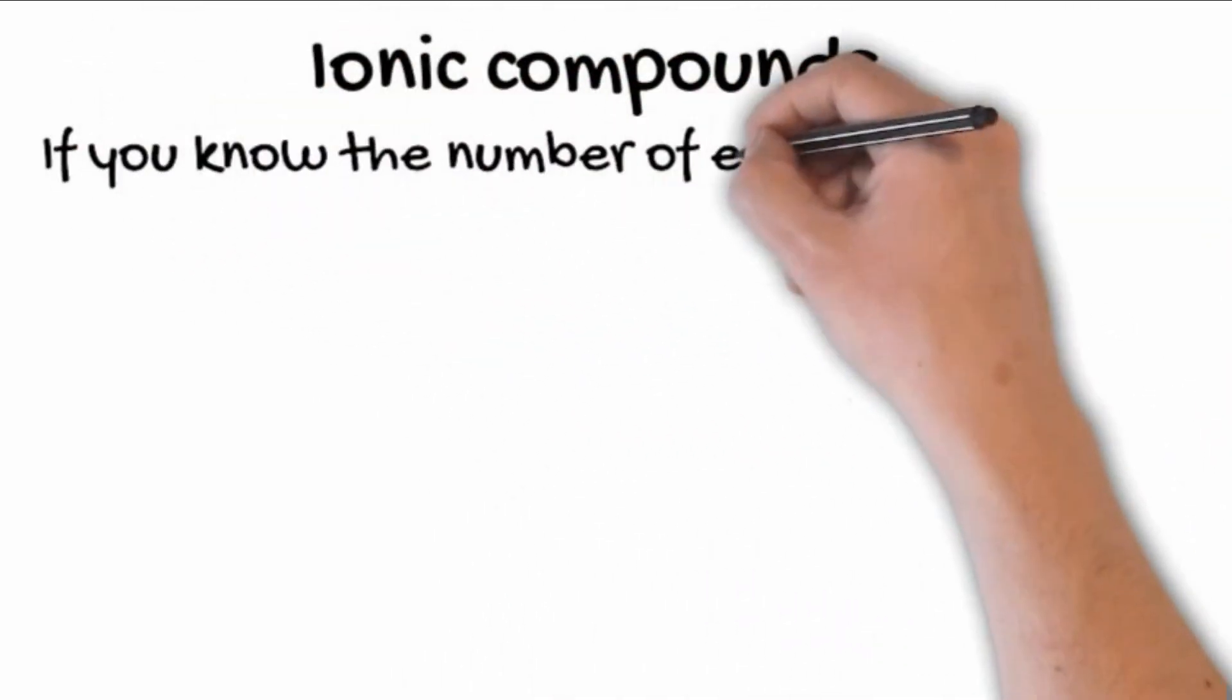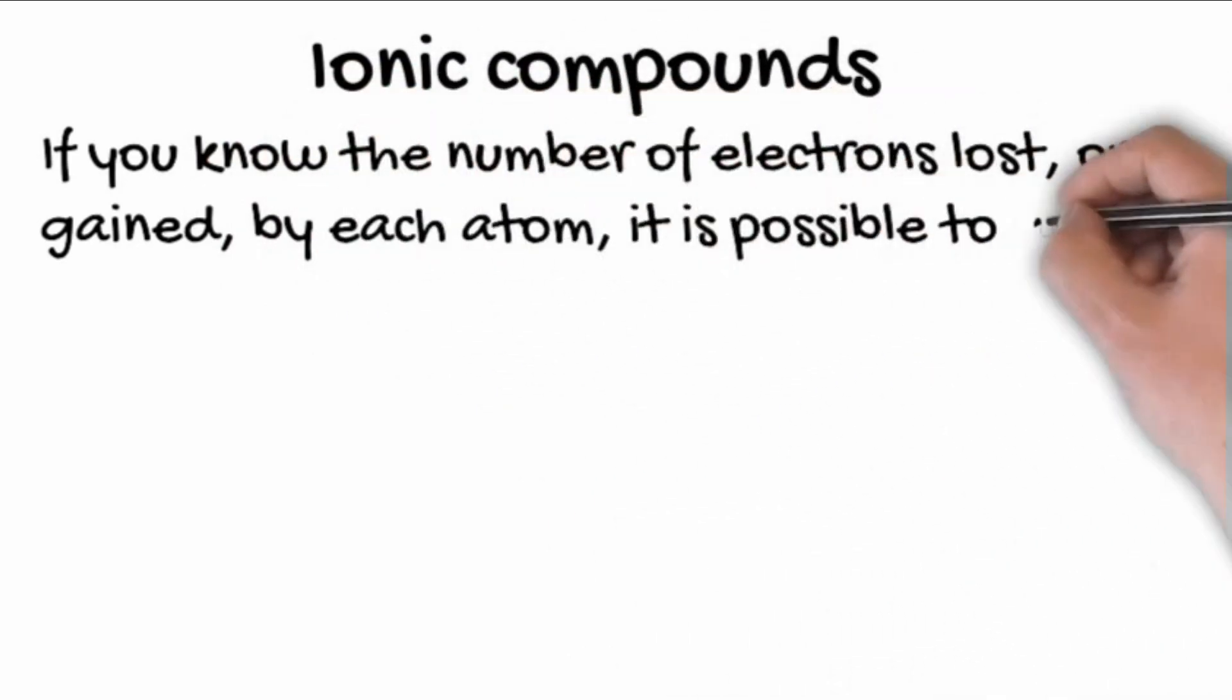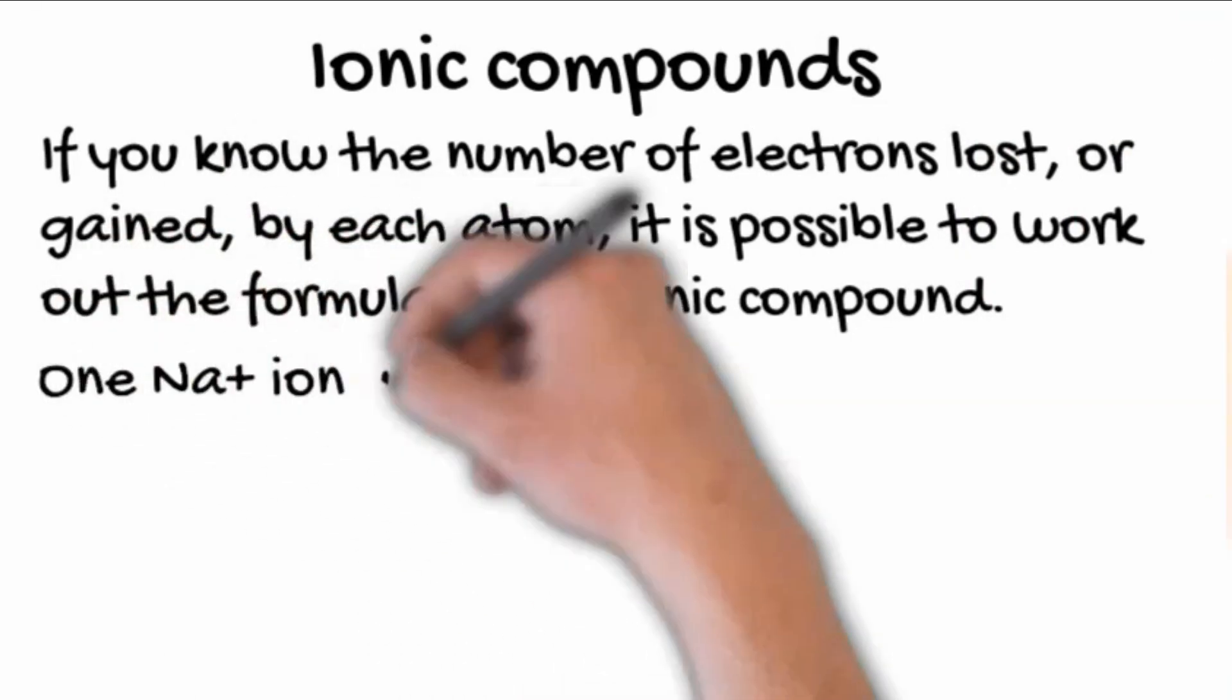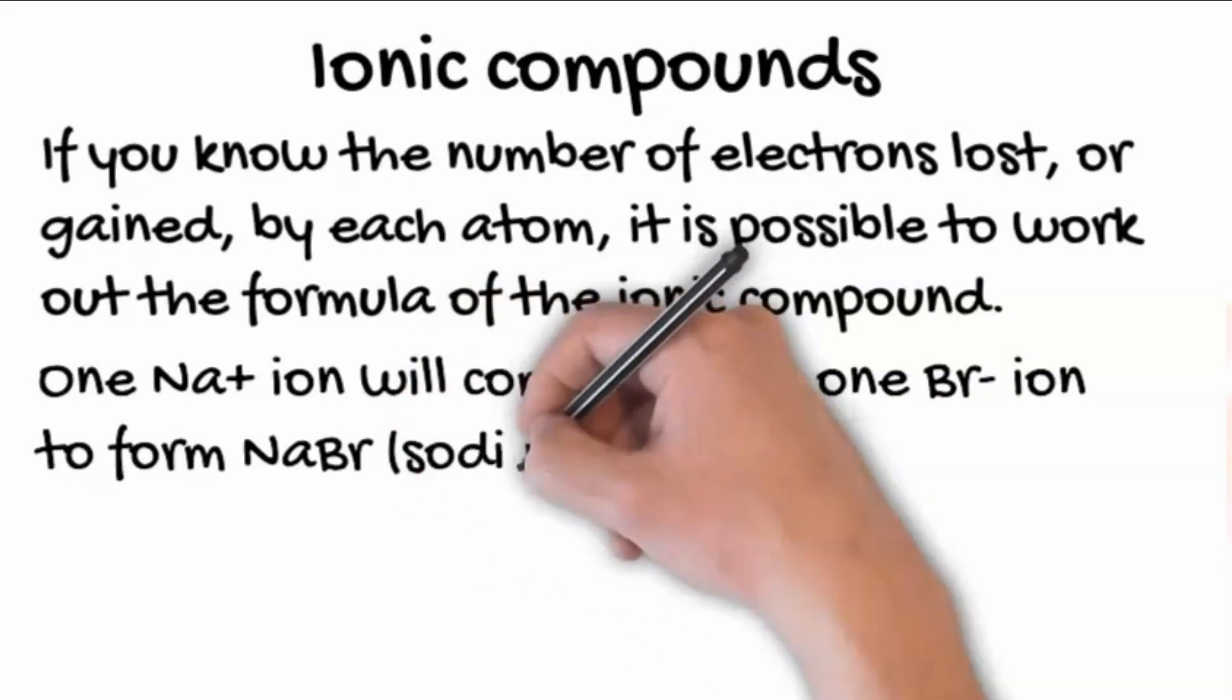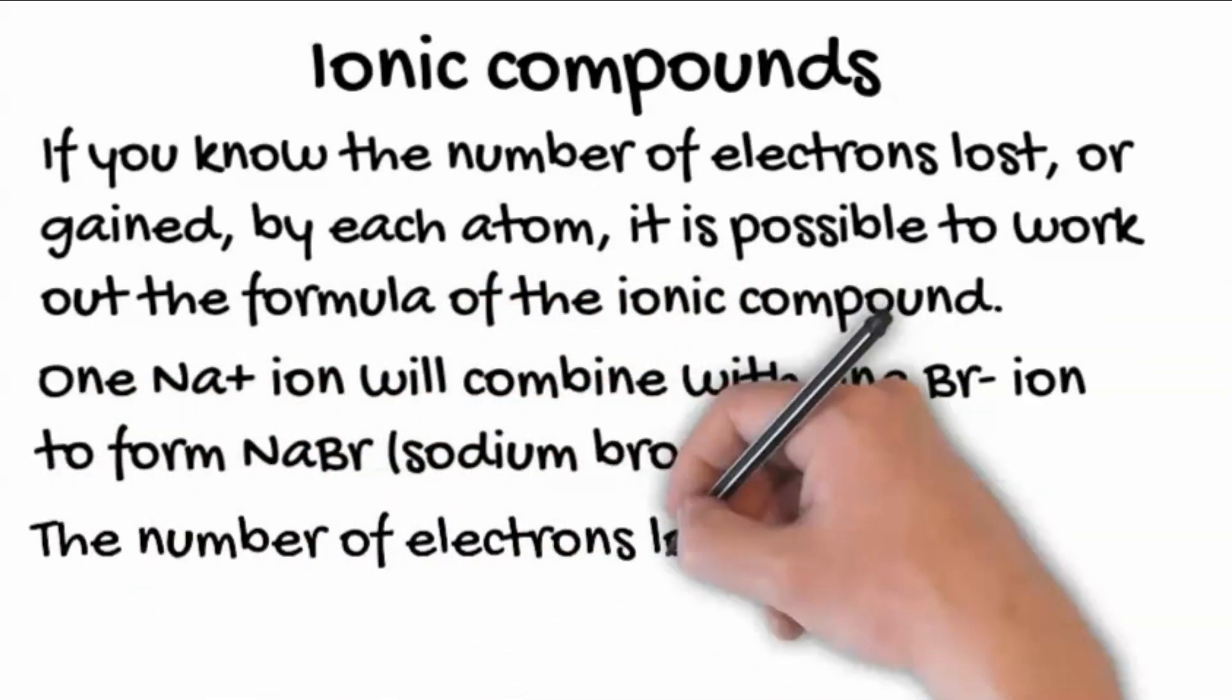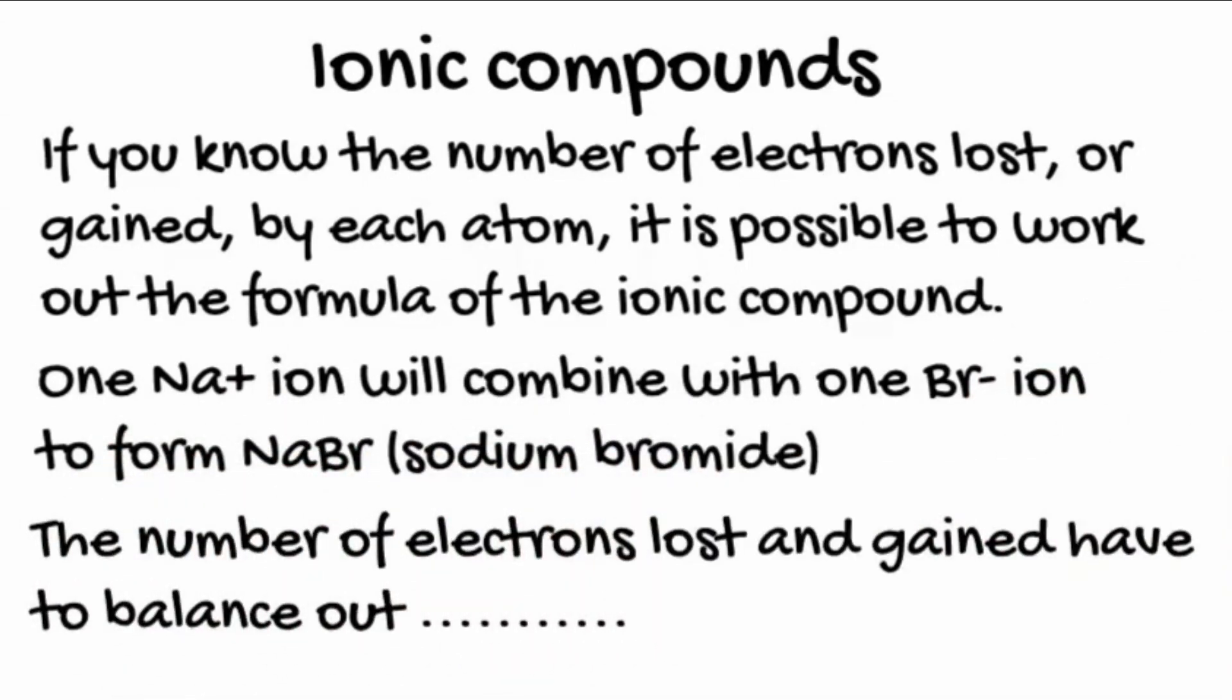If you know the number of electrons lost or gained by each atom, it is possible to work out the formula of the resulting ionic compound. A single sodium+ ion will combine with a single bromide- ion to form sodium bromide, NaBr. In the end, the number of electrons lost and gained have to balance out.